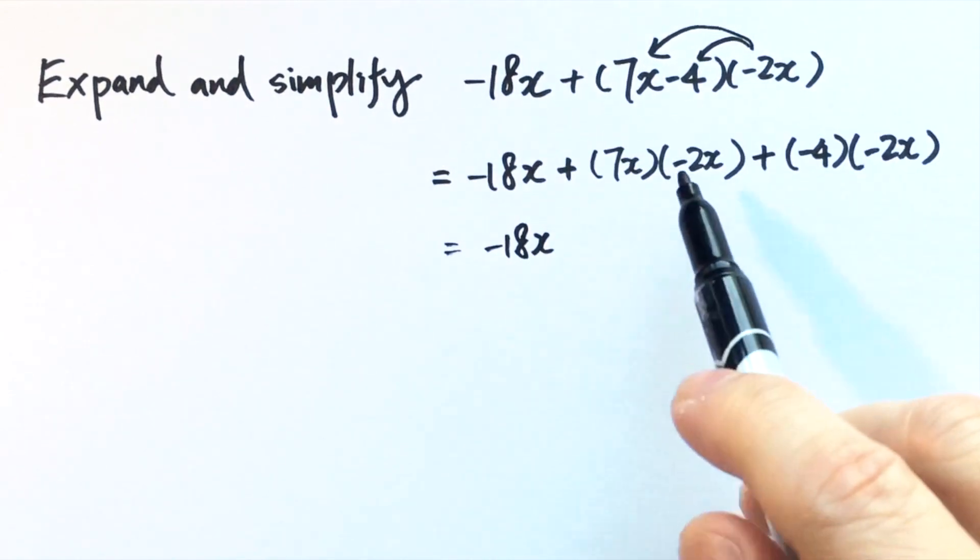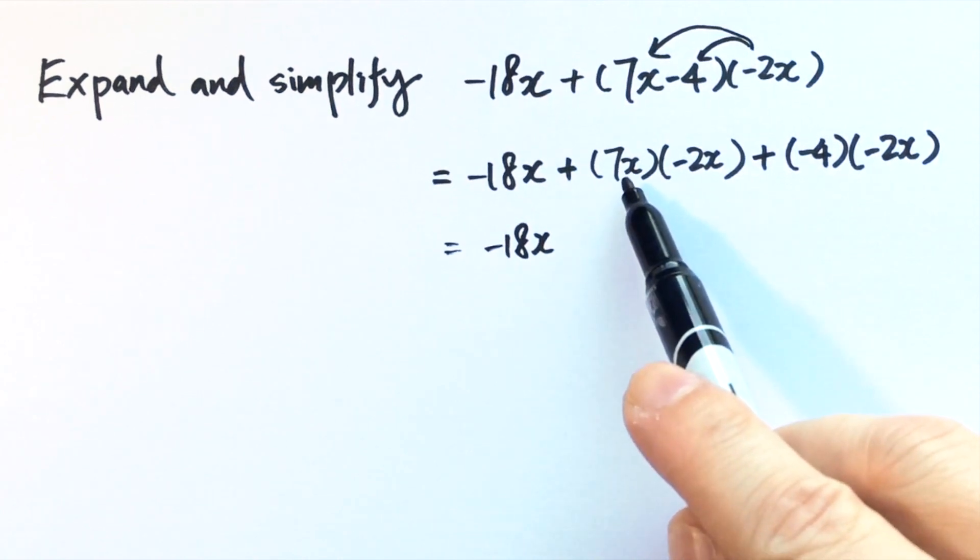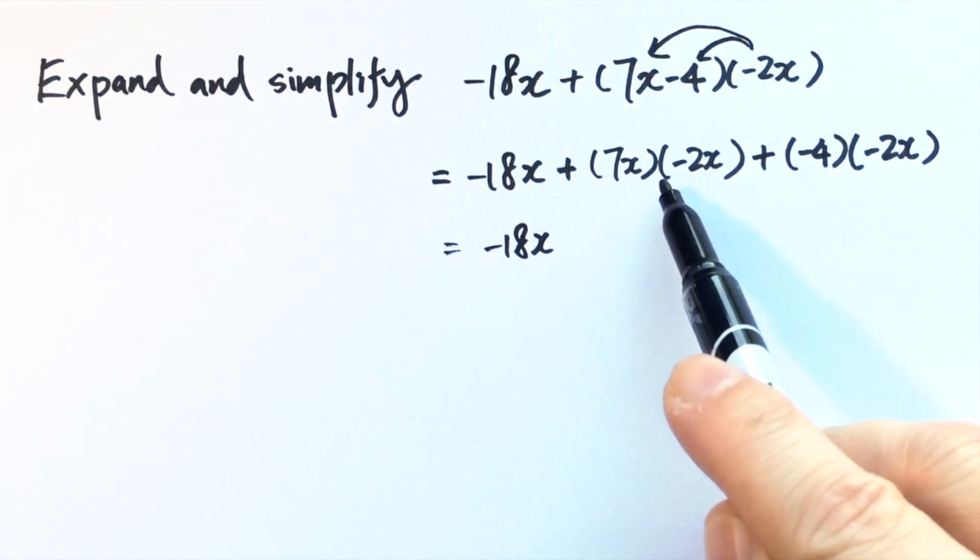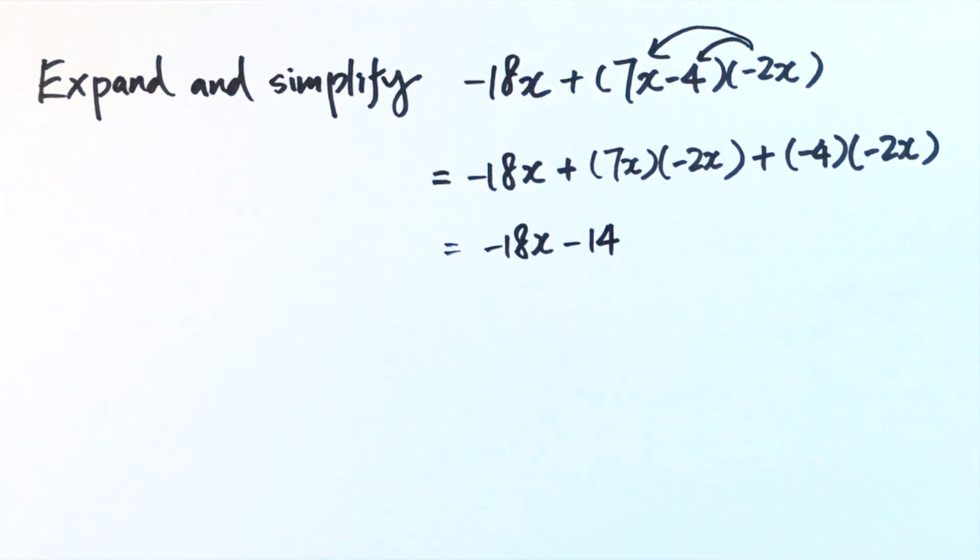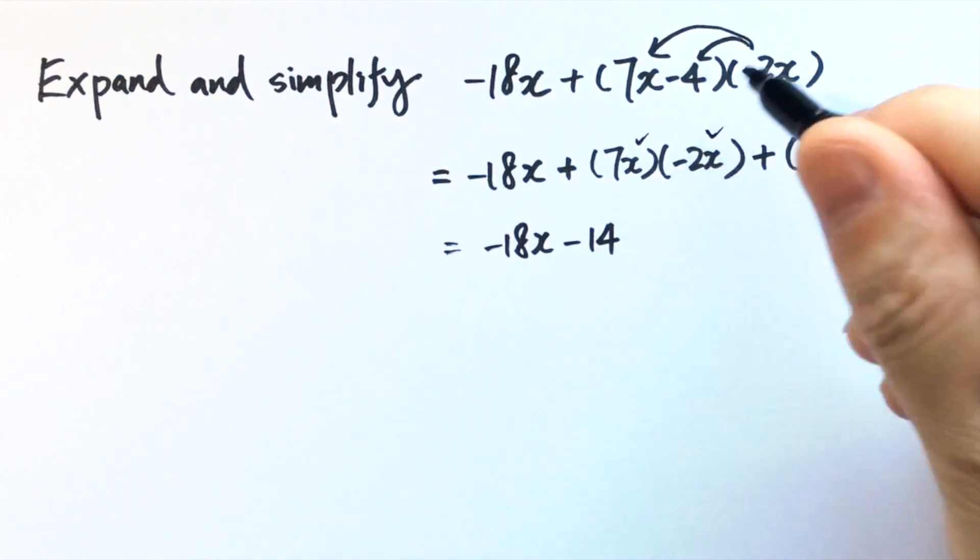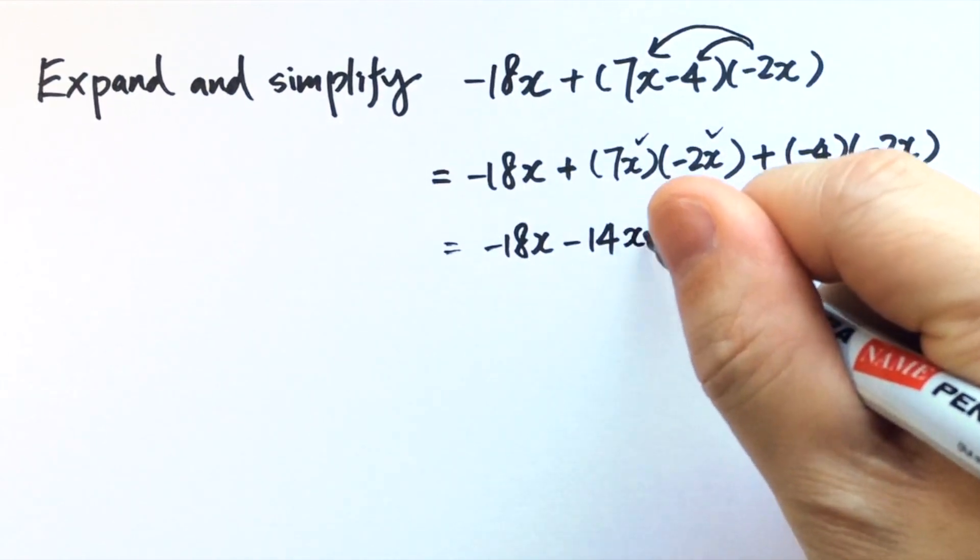Now we can simplify the smaller brackets. 7x times negative 2 is negative 14. X times x, you have x squared.